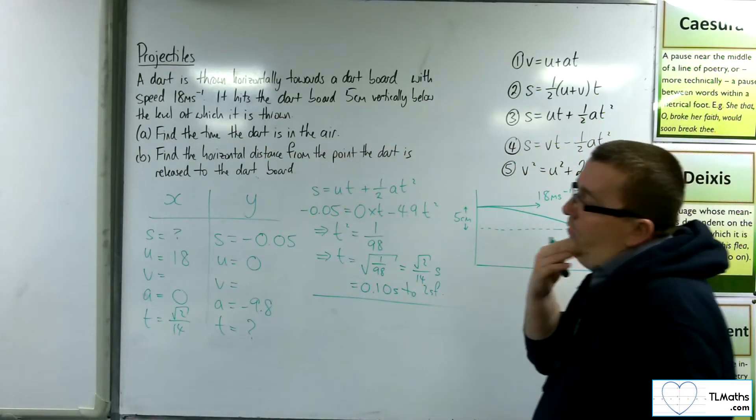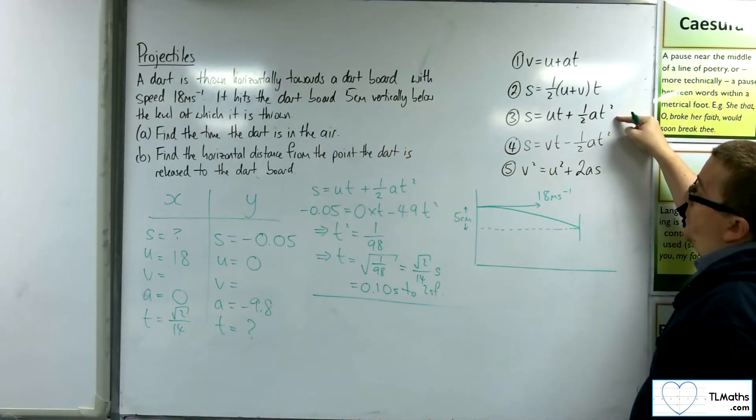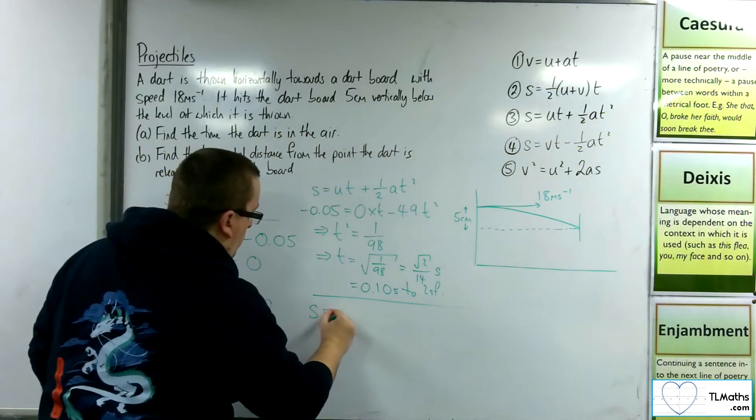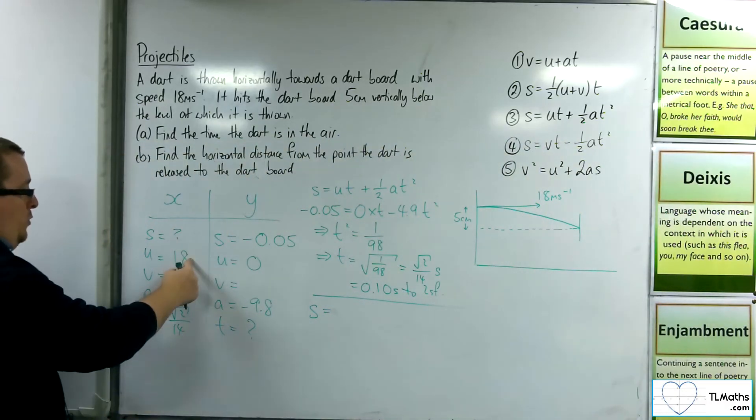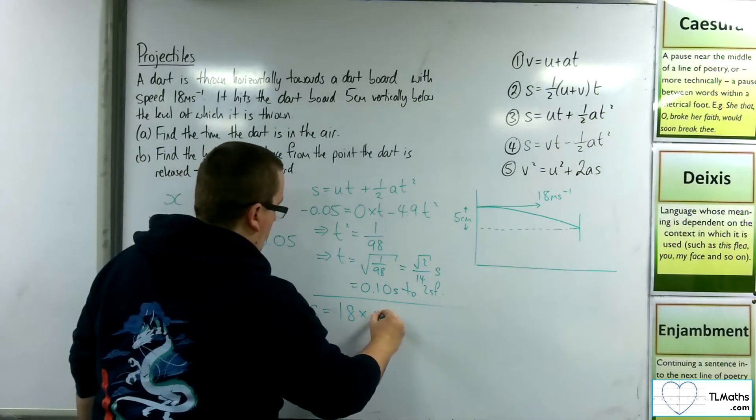Okay, so now, in order to do that, I could use that third equation again, because I don't have the v. So s is what I want. And that's equal to u times t. So 18 times root 2 over 14.